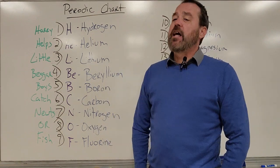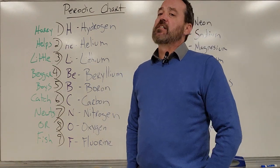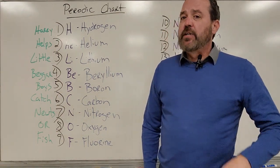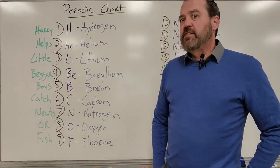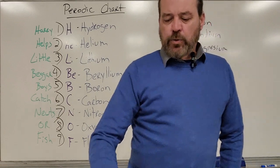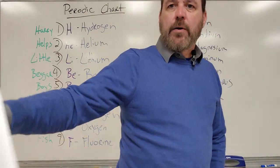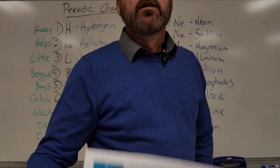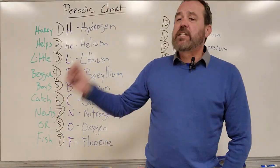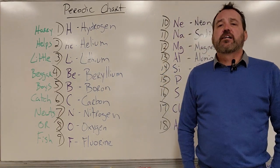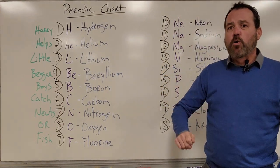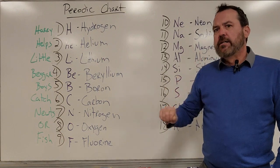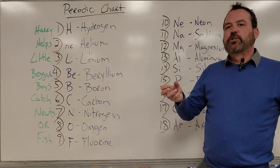Some of this will apply to a regular chemistry class if you take it, some of it will not, depending on which chemistry you end up in. So with that being said, I'm going to jump into the periodic chart to get us going. For this class, we need to know the first 18 elements of the periodic chart, and we need to be able to put them in order 1 through 18.